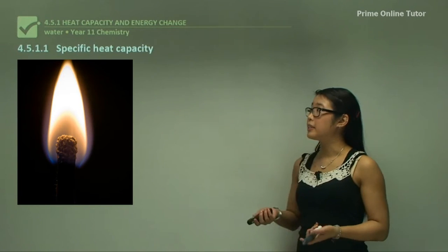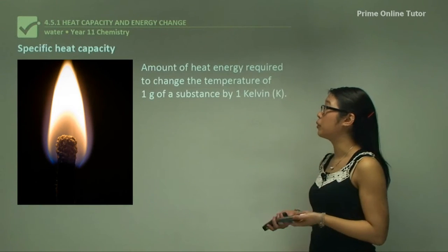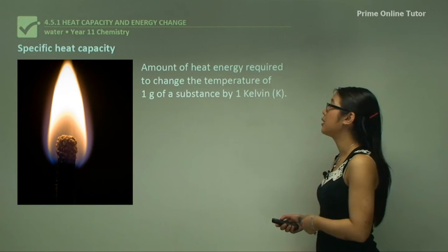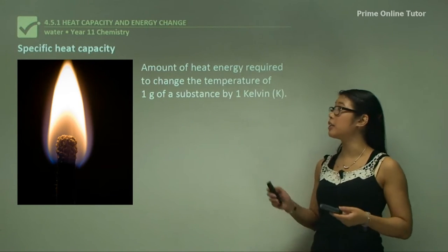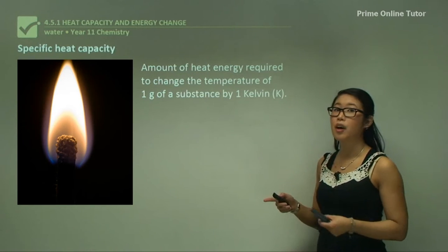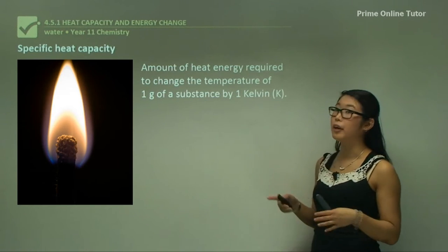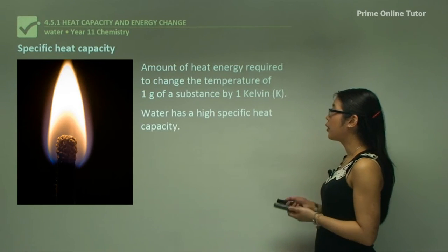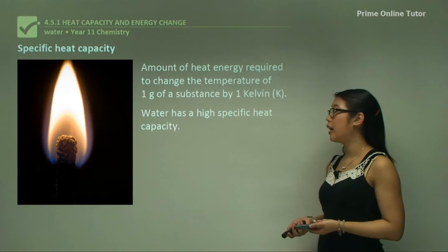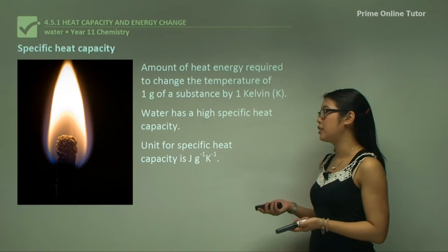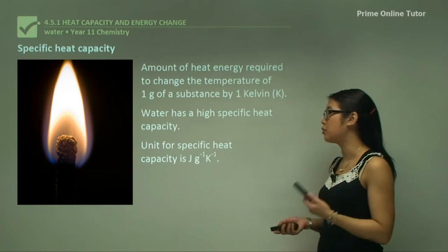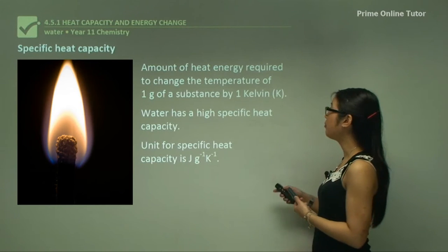The heat capacity is what we'll be looking at first. Specific heat capacity is the amount of heat energy required to change the temperature of one gram of substance by one Kelvin. Water has a high specific heat capacity and the unit for this is joules per gram per Kelvin.